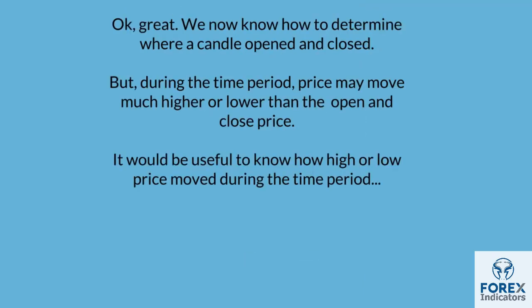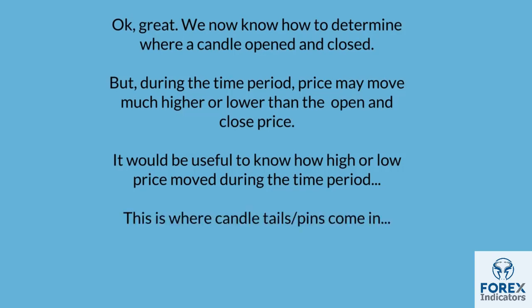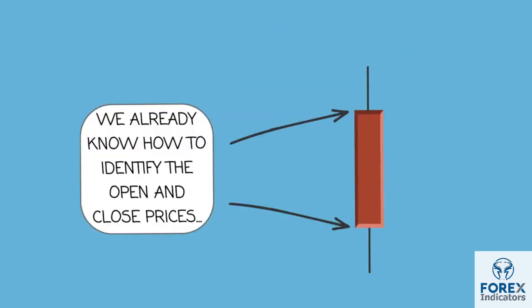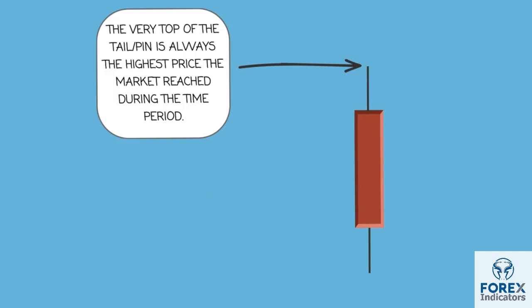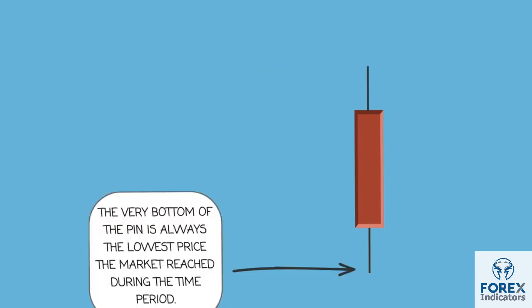We now know how to determine where a candle opened and closed. But during the time period, price may move much higher or lower than the open and close price. This is where candle tails or pins come in. To identify the very highest and lowest price the market reached during the time period, we use candle tails or pins. The very top of the tail is always the highest price the market reached, and the very bottom of the pin is always the lowest price the market reached during the time period.